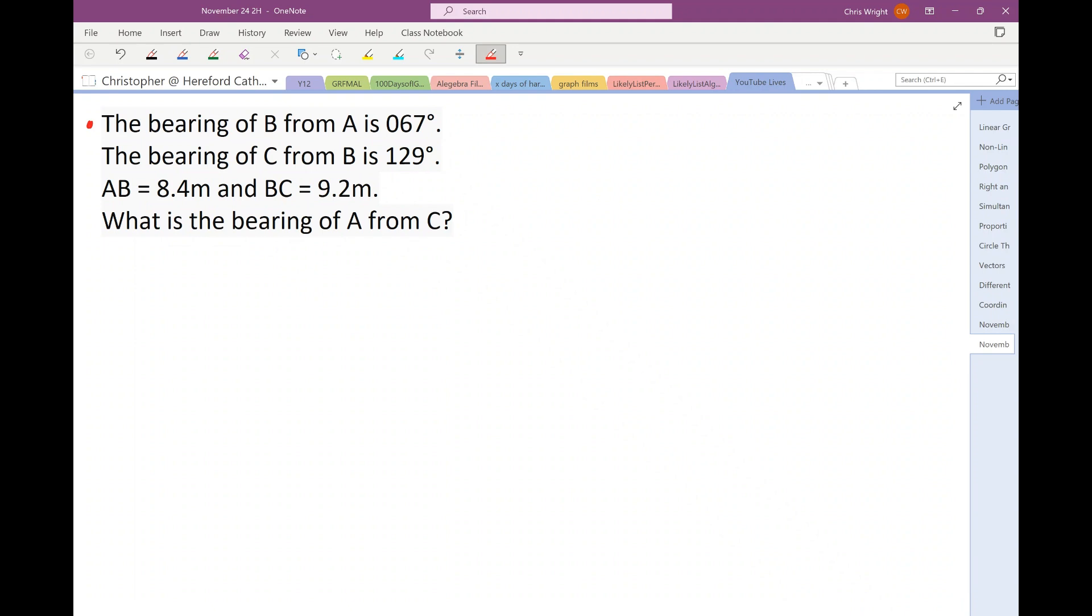So, this is the bearing of B from A. You just need to approach these questions quite carefully and steadily. So, from A. So, here's A. Okay, let me draw myself a north line here. Okay, so there's my north line. So, the bearing of B from A. Right. Now, of course, I don't need, nor would I be expected to draw it accurately. It's 067, so it's going to be about here, isn't it? Okay, so I'm going to label that 67. And here is B.